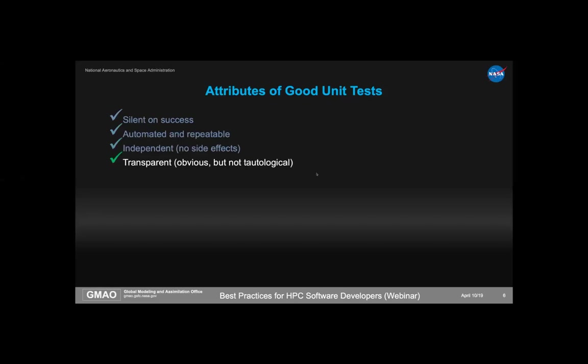We want tests to be obvious — choose initial conditions that lead to obvious results, without being tautological. We want tests to be narrow, exercising a very small part of the full system. When a narrow test fails, it tells you exactly where something went wrong. Contrast this with regression tests: when that fails overnight, it doesn't tell me where in the code the failure occurred, just that there is a problem.